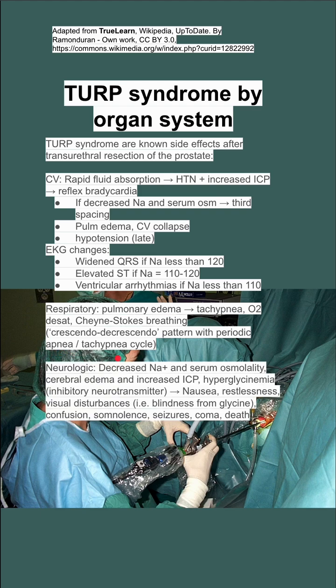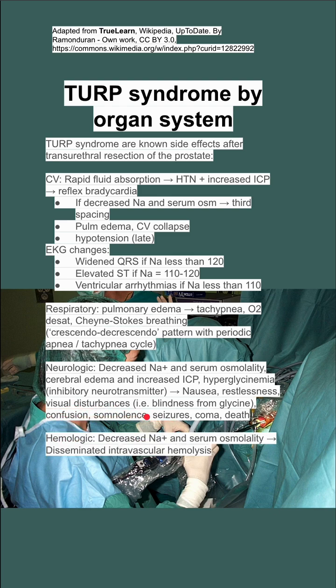From a neuro standpoint, that same sodium and serum osm decrease can lead to cerebral edema. Hyperglycinemia — which is high glycine, an inhibitory neurotransmitter — can cause all kinds of bad neurologic effects, including visual disturbances, seizures, and somnolence.